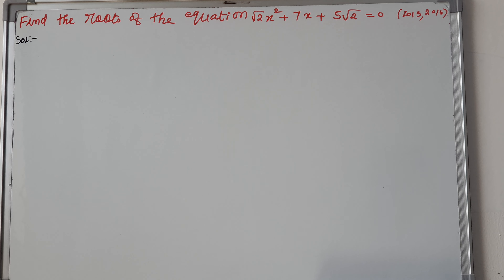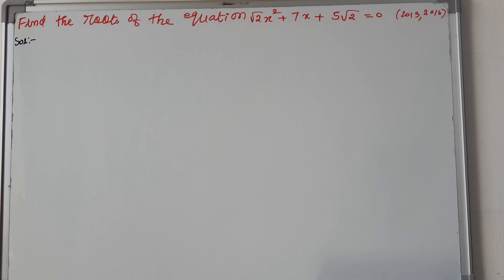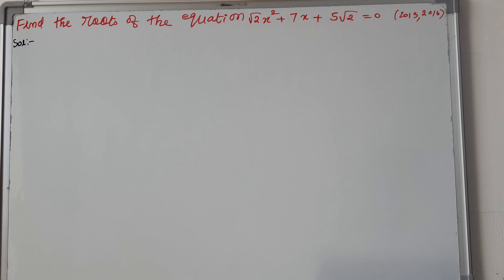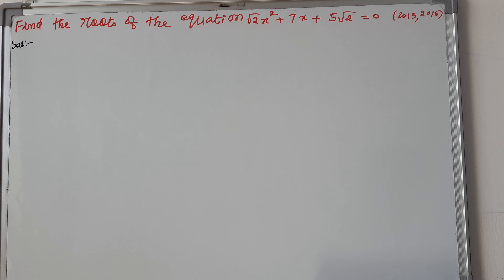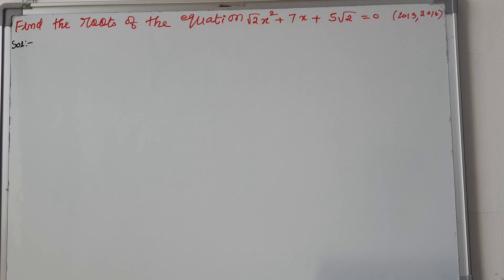Find the roots of the equation: root 2 x squared plus 7x plus 5 root 2 is equal to 0. This question has appeared in the 2013–2016 board exams.